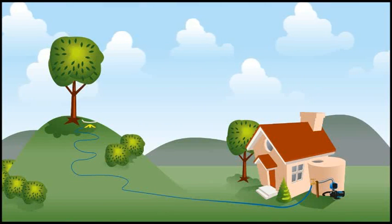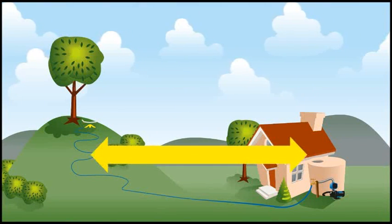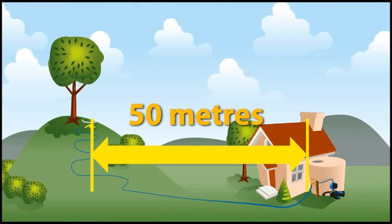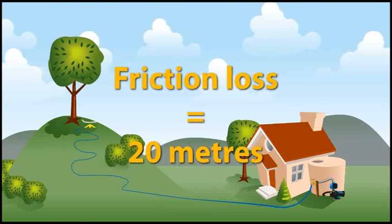In Aunty Flo's case, she only requires 50 metres of pipe, therefore we must halve the value. Half of 40 is 20. 20 metres is therefore our friction loss.